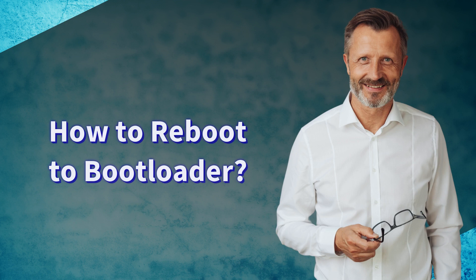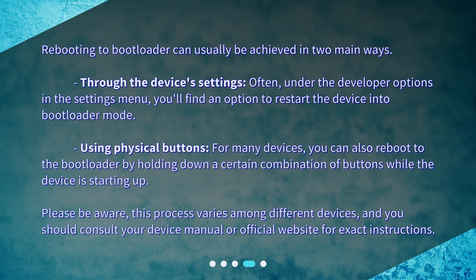How to reboot to bootloader? Rebooting to bootloader can usually be achieved in two main ways. Through the device's settings — often under the developer options in the settings menu, you'll find an option to restart the device into bootloader mode. Using physical buttons — for many devices, you can also reboot to the bootloader by holding down a certain combination of buttons while the device is starting up. Please be aware this process varies among different devices, and you should consult your device manual or official website for exact instructions.